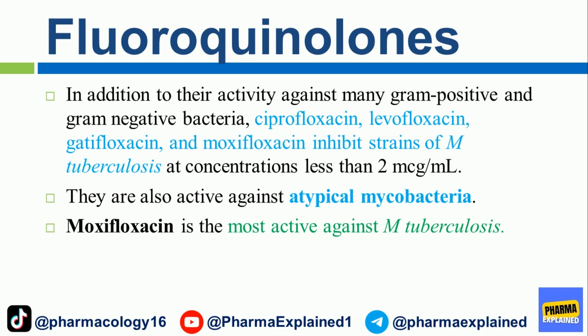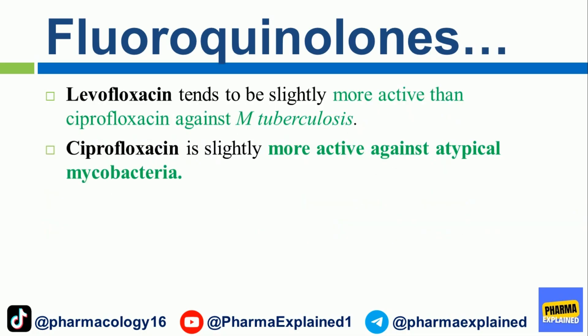Fluoroquinolones: In addition to their activity against many gram-positive and gram-negative bacteria, ciprofloxacin, levofloxacin, gatifloxacin, and moxifloxacin inhibit strains of M. tuberculosis at concentrations less than 2 micrograms per milliliter. They are also active against atypical mycobacteria. Moxifloxacin is the most active against M. tuberculosis. Levofloxacin tends to be slightly more active than ciprofloxacin against M. tuberculosis, while ciprofloxacin is slightly more active against atypical mycobacteria.